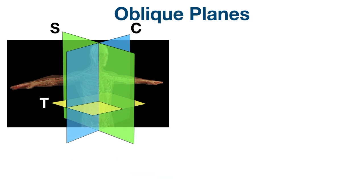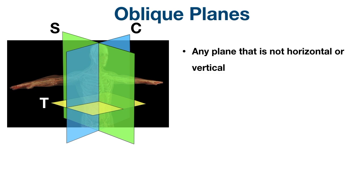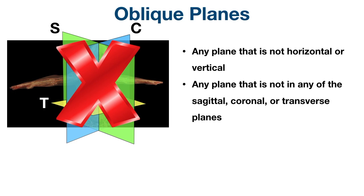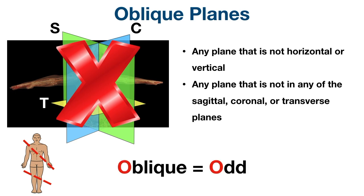You might also hear of oblique planes. An oblique plane is any plane that is not horizontal or vertical — in other words, not in any of the sagittal, coronal, or transverse planes. They can run at any angle through the body. You can think of your oblique muscles that travel at an angle, or remember that oblique and odd both start with the letter O — oblique planes are odd and travel at strange angles.